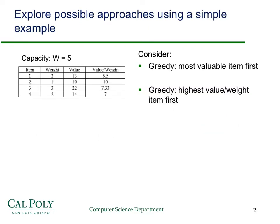One thing you might consider is using a greedy algorithm. Here's a simple problem with just a small weight capacity of five and only four items to consider. Two of the common greedy approaches are: take the most valuable item first, looking at the values column; or figure out the value-to-weight density and take the items with the highest value-to-weight ratio first. Try both and think about whether they give you the optimal solution for this example.